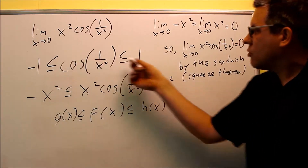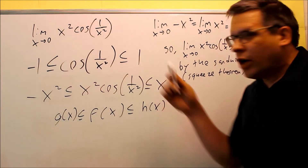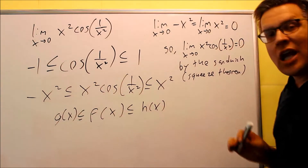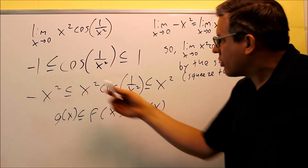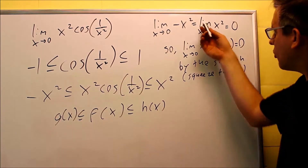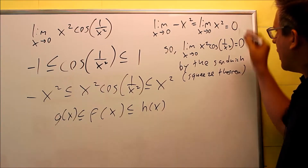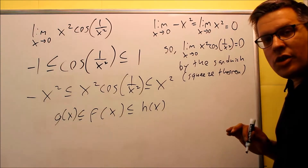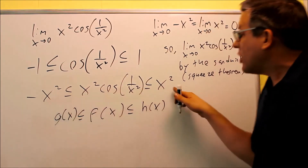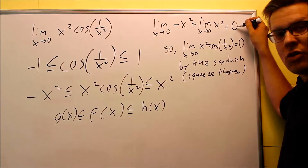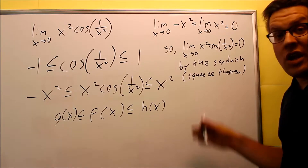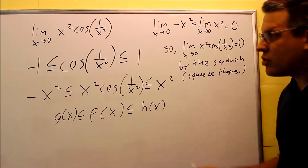So again, we start with a true statement: cosine is between negative one and one. We multiply both sides by x squared to form our g of x and h of x. We notice that when we take the limit of both, the limit as x approaches zero of negative x squared equals the limit as x approaches zero of x squared, which is zero. So we're sandwiching the middle function in between these two. Because these two go to zero, the original one goes to zero as well by the squeeze theorem. The answer for this problem is zero.